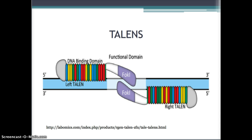To overcome this problem, another technique was discovered. Transcription activator-like effector nucleases, also known as TALENs, are very similar to the zinc finger nucleases, except that each amino acid of the TALEN can identify only a single nucleotide in the DNA sequence. TALENs are typically composed of 33 to 35 amino acids. TALENs are capable of doing what zinc finger nucleases can do, but at a faster and cheaper rate.